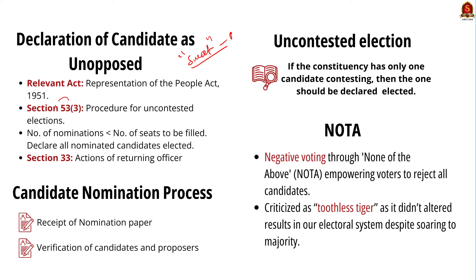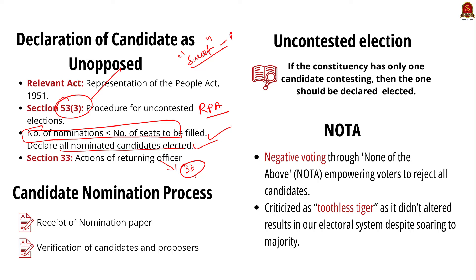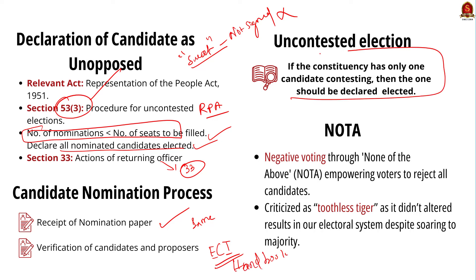Section 53(3) of the Representation of People's Act, 1951 deals with the procedure in uncontested elections. According to this provision, if the number of candidates is less than the number of seats to be filled, the Returning Officer shall declare all such candidates to be elected. The Returning Officer's actions are governed by Section 33 of RPA. After receiving the nomination paper, the Returning Officer shall satisfy himself that the names and electoral roll numbers of the candidate and his proposers are the same as those entered in the electoral rolls. In Surat, three proposers of the Congress candidate claimed they had not signed his nomination form, so the nomination got cancelled. The Election Commission's Handbook for Returning Officers states that if there is only one contesting candidate, that candidate should be declared elected immediately after the last hour for withdrawal of candidature.